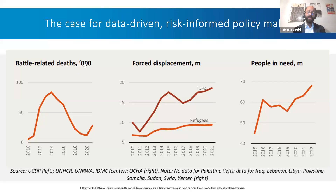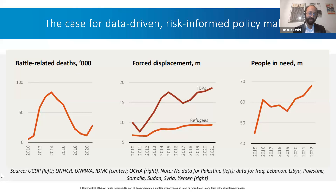We also look at the recent trends of conflict fatalities and related indicators to see how conflict impacts not only in the short term but also in the long term, and how this can impact future conflicts. In particular, we look at the battle-related deaths graph that shows a sharp increase after the outbreak of conflict in many Arab countries after 2011.